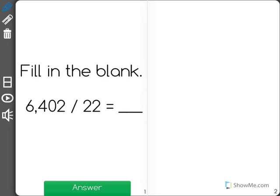Fill in the blank. 6,402 divided by 22 equals blank.